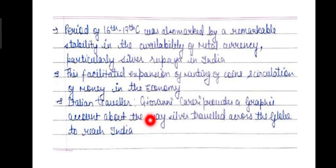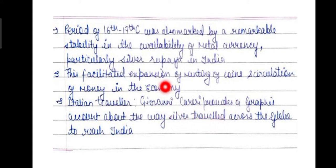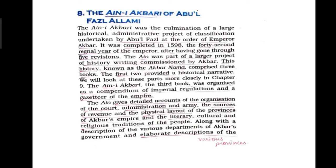Giovanni Careri wrote an account describing how silver traveled throughout the globe to reach India — such was the scale of Indian trade that silver had to travel across the entire globe to eventually reach India. Now we talk about the Ain-i-Akbari by Abul Fazl Allami.